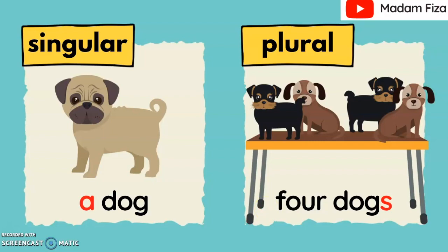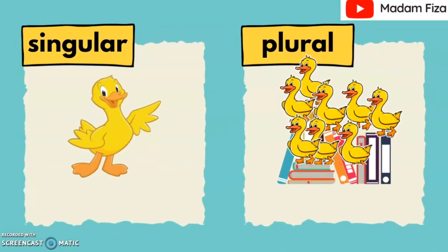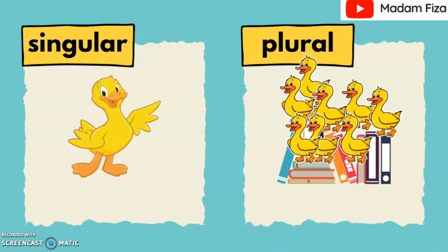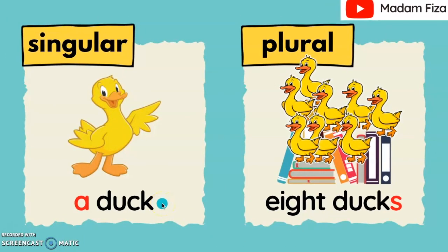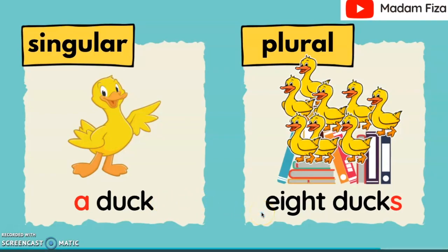Okay, what about this animal? How many dogs have we got here? The answer is... A dog is singular. Eight dogs are plural. Ten dogs are plural.